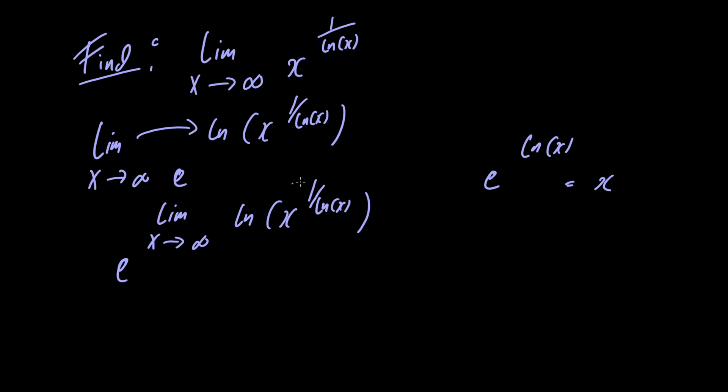Now, we can actually bring this power down to the front using properties of the natural logarithm. Doing so, we have e raised to the limit as x goes to infinity of the natural logarithm of x divided by the natural logarithm of x.